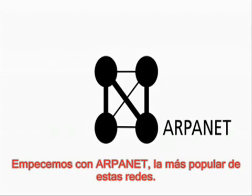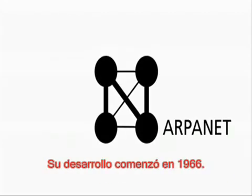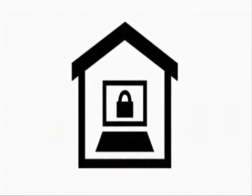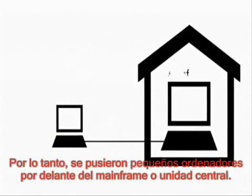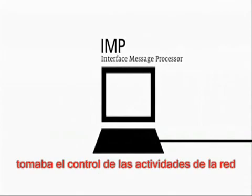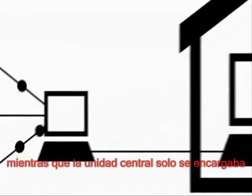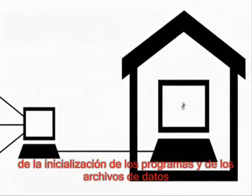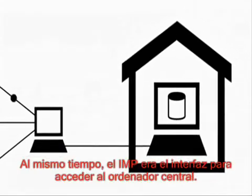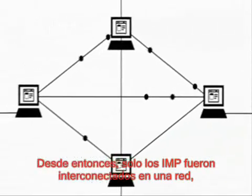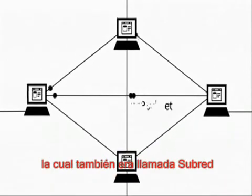Let's begin with the ARPANET, the most familiar of these networks. Its development began in 1966. Universities were generally quite cautious about sharing their computers. Therefore, small computers were put in front of the mainframe. This computer, the interface message processor, took over control of the network activities, while the mainframe was only in charge of the initialization of programs and data files. At the same time, the IMP also served as interface for the mainframe. Since only the IMPs were interconnected in a network, this was also called the IMP subnet.